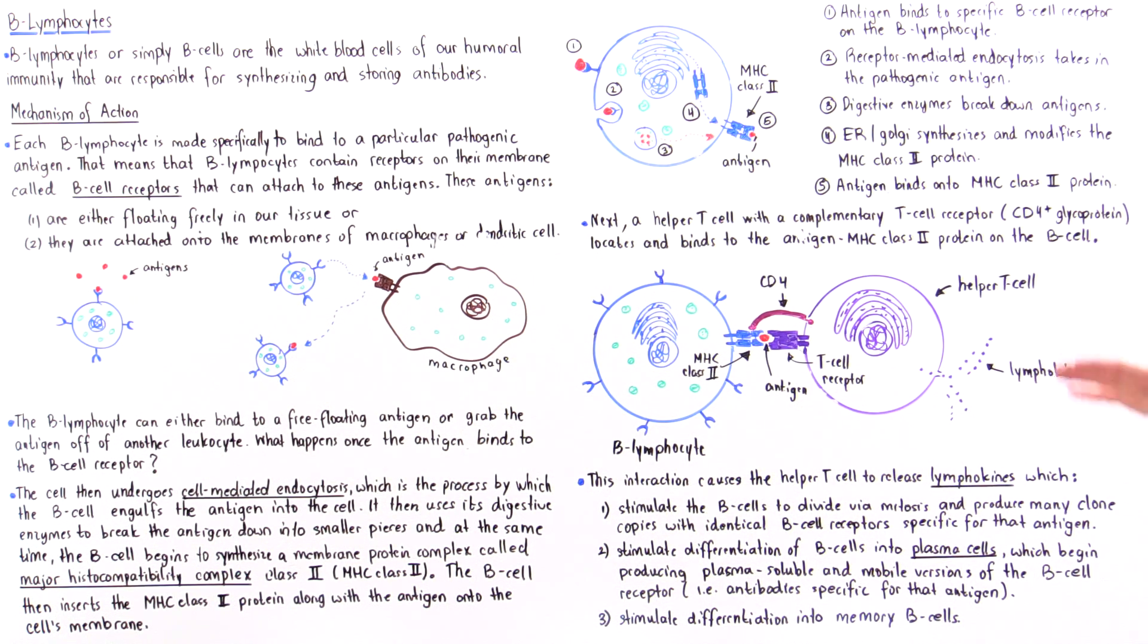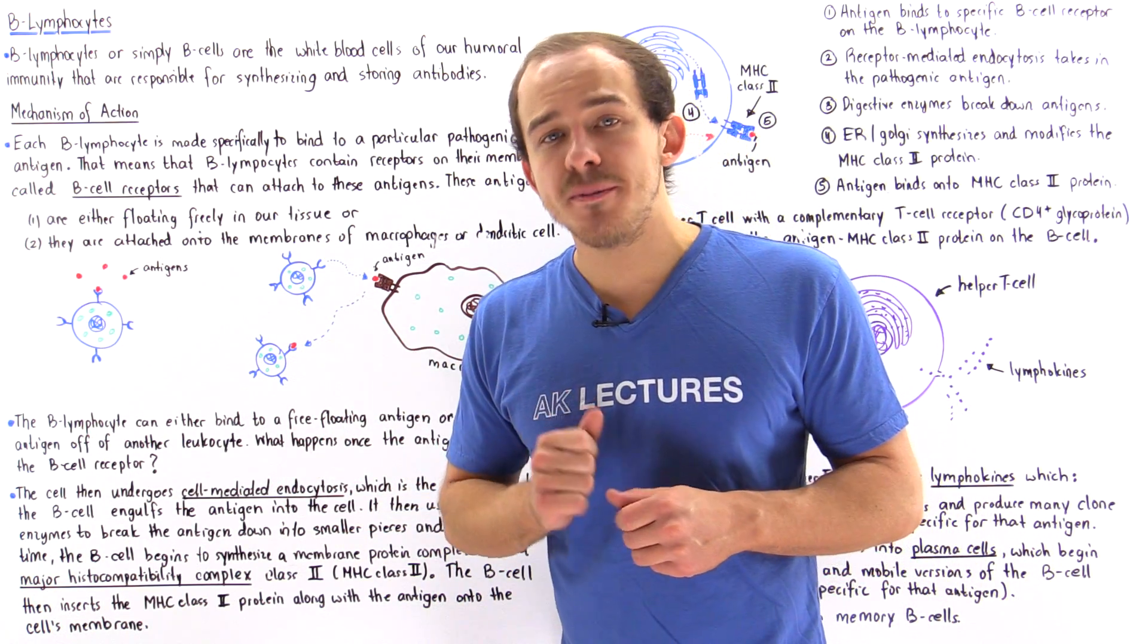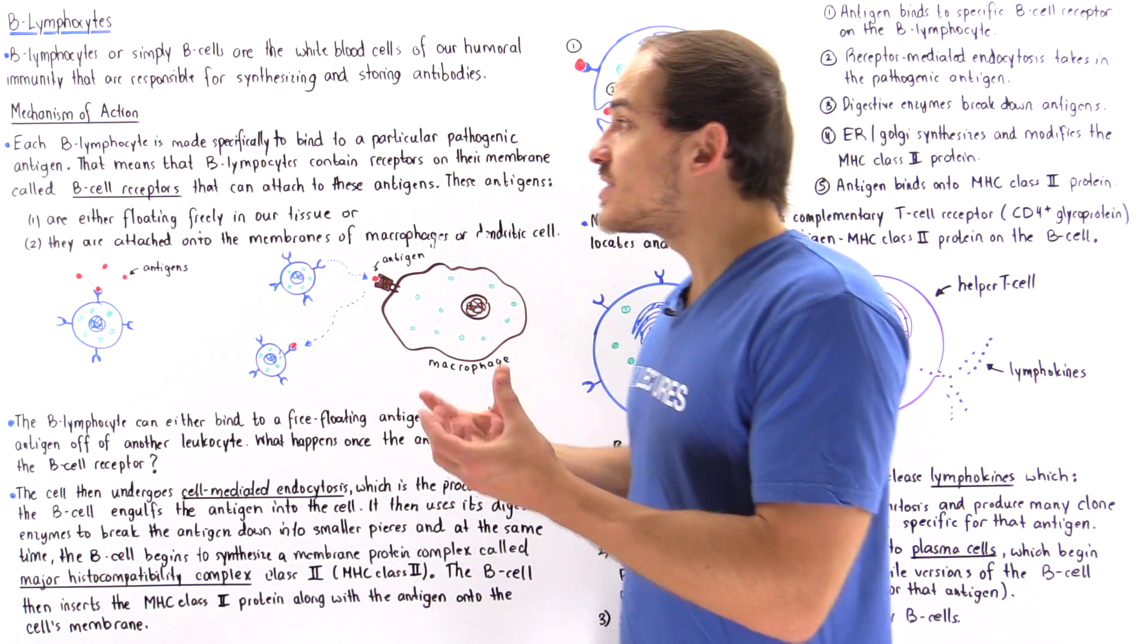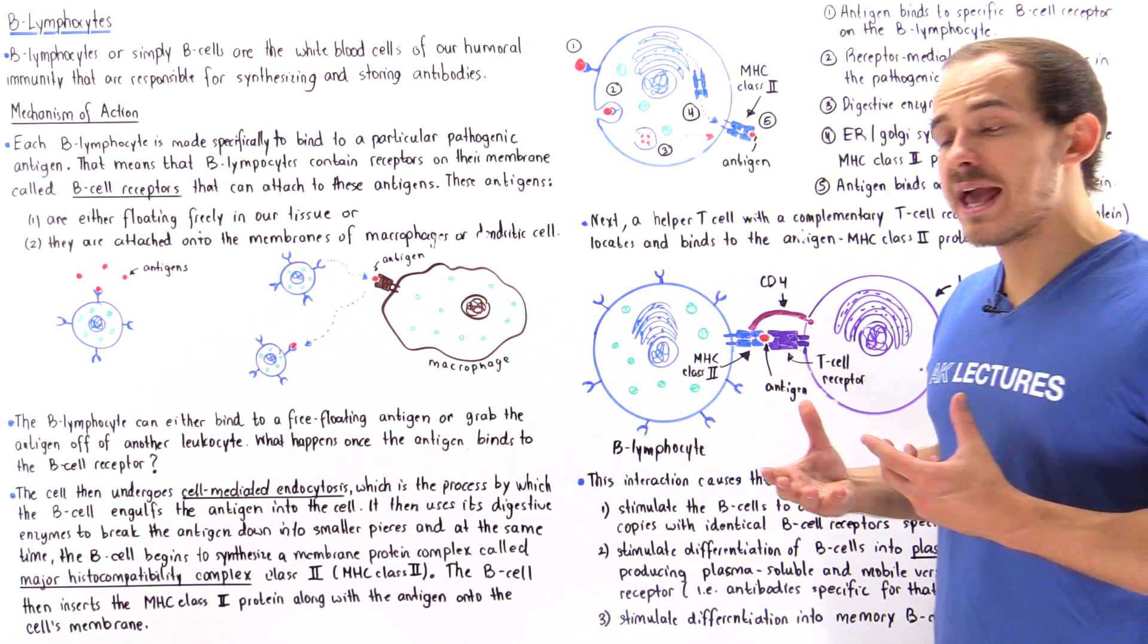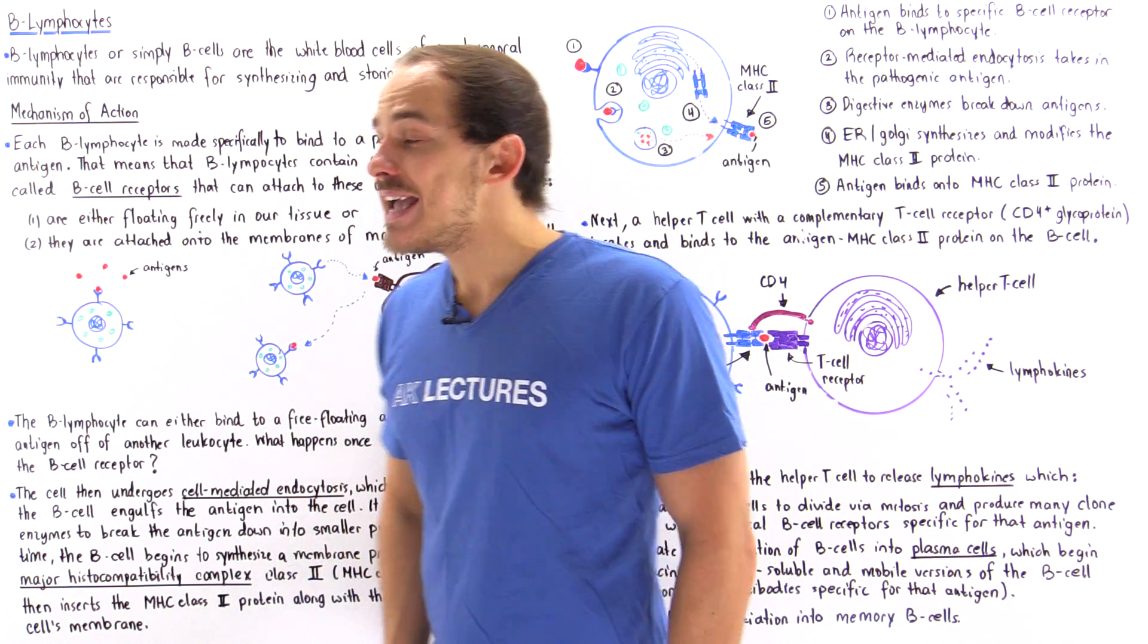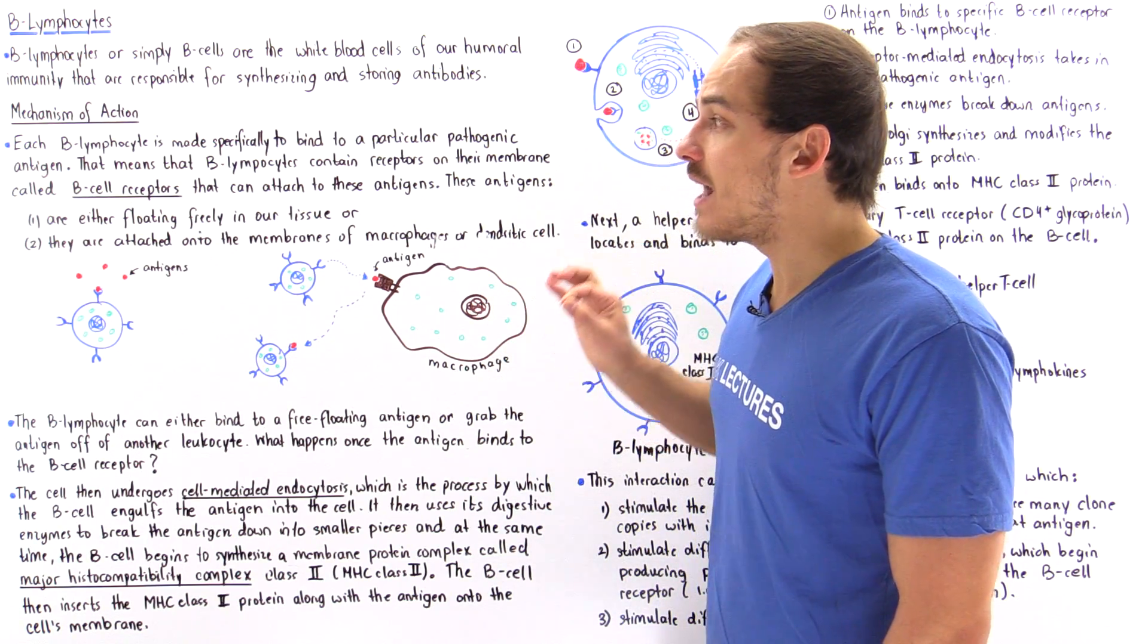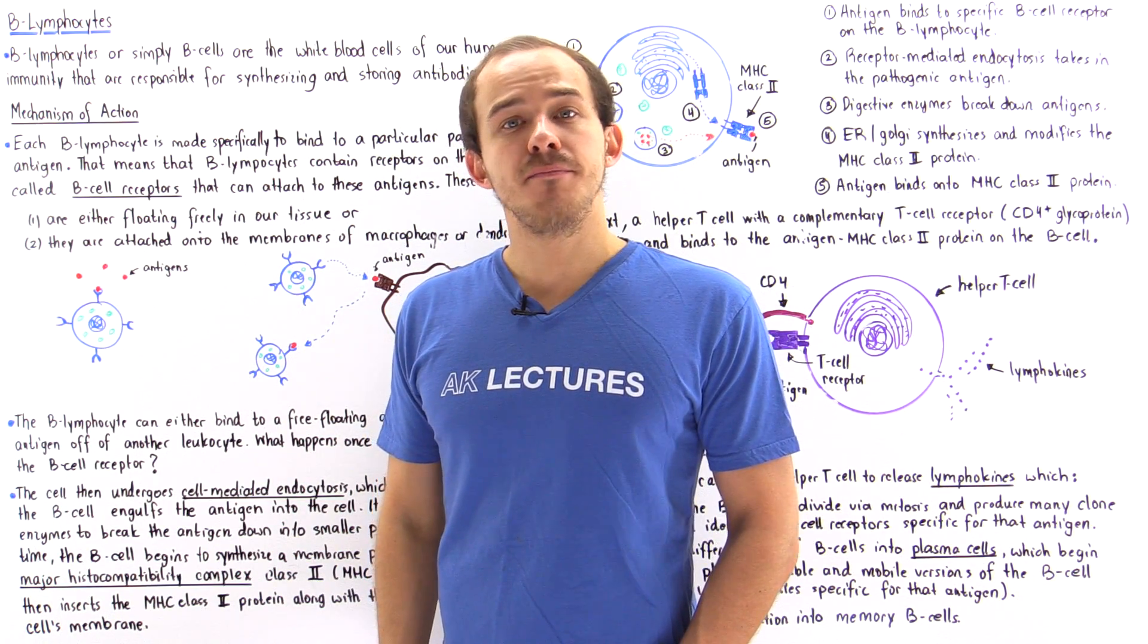Finally, these chemicals induce differentiation of B lymphocytes into memory B cells. Memory B cells, instead of producing antibodies, store a copy of the antibody in case reinfection by that same pathogenic antigen takes place. If the body is reinfected by the same pathogen, memory B cells will have a copy of that antibody and will recognize those cells immediately, labeling them for destruction by our immune system.